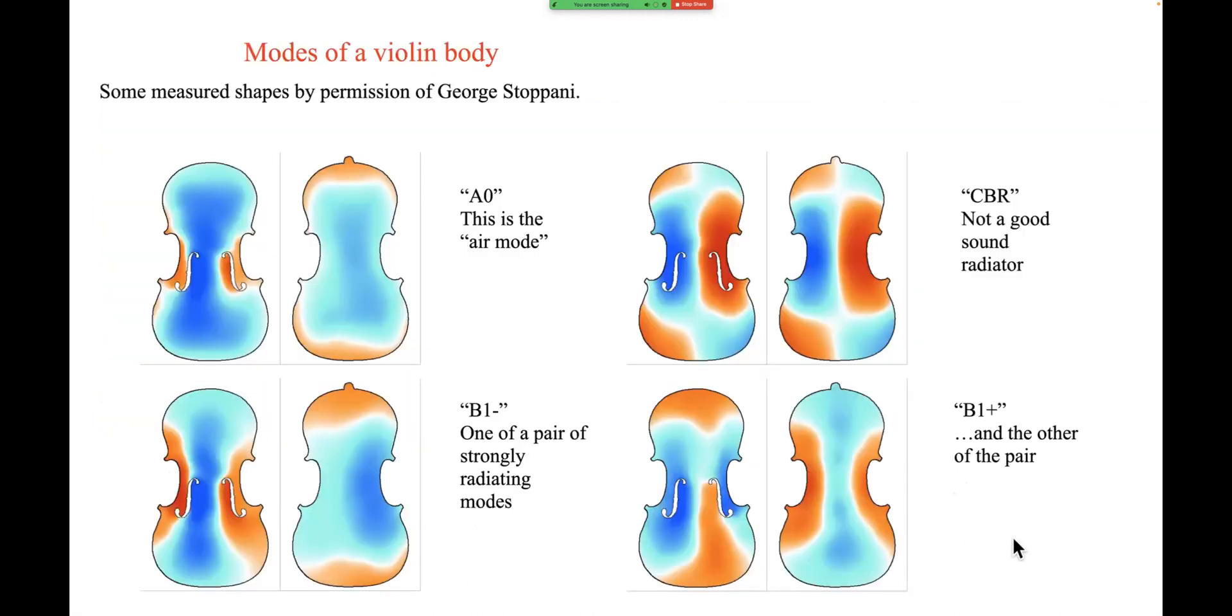The corresponding pictures for the violin body are much more complicated. Maybe you could have made a guess at some of those shapes on the guitar. But I don't think anybody managed to guess the modes of a violin and it's only relatively recently when measurements became possible by one means or another that people have really known what the vibration mode shapes of a violin body are like. These are measurements. They're done by George Stepani using a technique called experimental modal analysis, which I will talk about in a later talk. That doesn't matter for the moment.